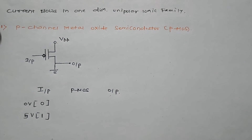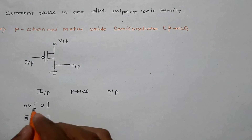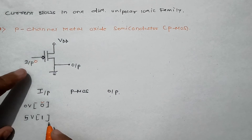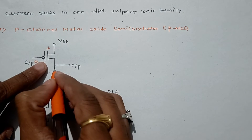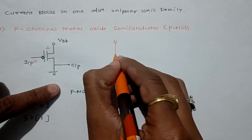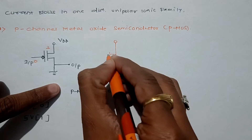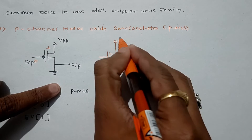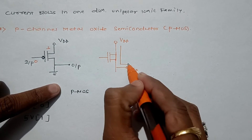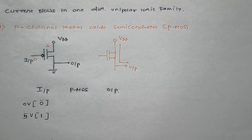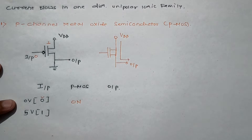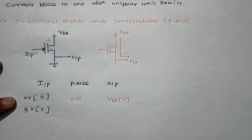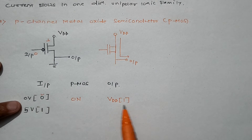When we apply logic 0 at the input, its complement is 1, which means this transistor will be short-circuited — it will be in the ON state. Whenever it is short-circuited, the high voltage VDD will be connected to the output. So when input is 0, output is connected with VDD and we get logic 1.